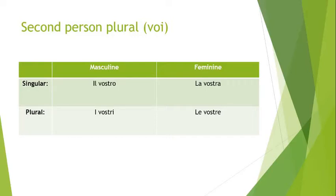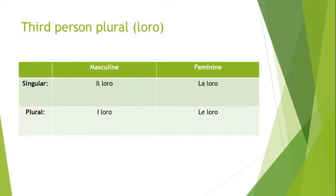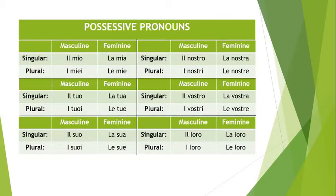The last one is the easiest — third person plural 'loro.' It literally just stays 'loro' the whole time and doesn't change: il loro, la loro, i loro, le loro. The pronoun is the same as the possessive pronoun, just with the article added. Here's a full chart with all the possessive pronouns for each person — you can pause the video, write this down, take a screenshot, whatever you'd like.